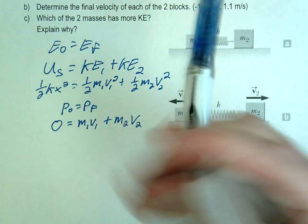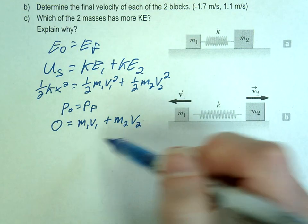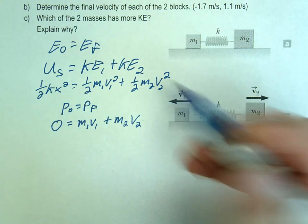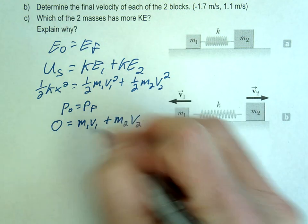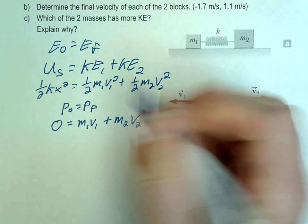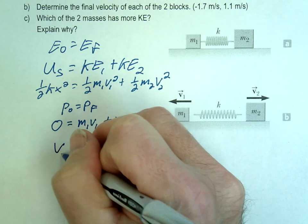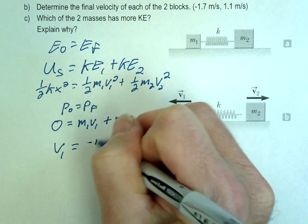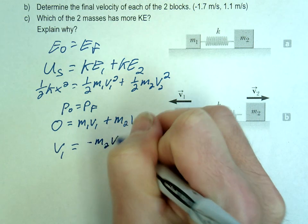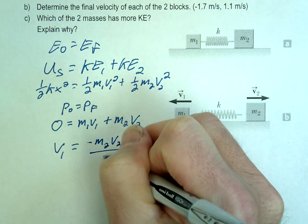So my recommendation is set it up with the masses. Okay, go ahead and do the masses. Sorry, with the momentum. Solve it for that one first. So rearrange your equation. You guys just did this yesterday. So V1 equals what does that equal? Negative M2 V2 divided by M1.